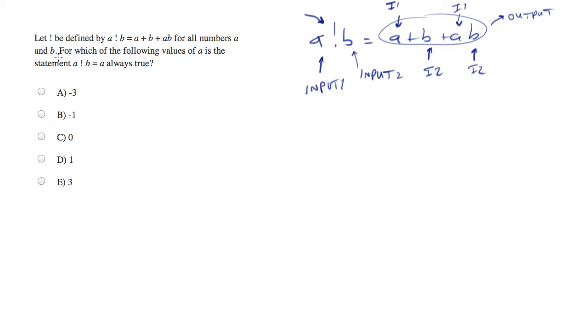Now we're asked for something slightly complex here, which is, for which of the following values of A is the statement A exclamation point B equals A always true? So first, let's generate A exclamation point B equals A.